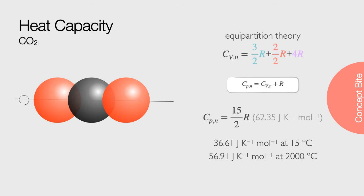Another example of this divergence from theory is carbon dioxide. Equipartition theory would suggest the heat capacity at constant pressure should be 15 halves R, about 62.35 joules per Kelvin per mole. Recall that heat capacity at constant pressure is R more than the heat capacity at constant volume.